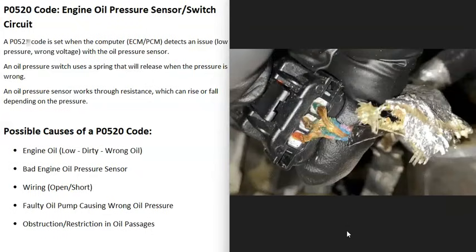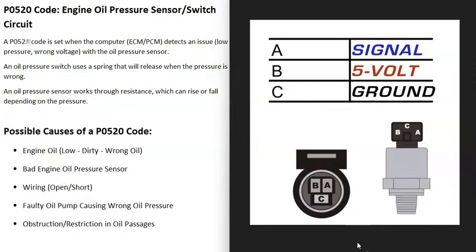The next thing that could cause this is a wiring problem — an open, a short, or something going on inside the wiring. If you have a multimeter, you can test the wiring. You'll need a diagram and schematics for your particular vehicle. It's very common for these oil pressure sensors to be three-wire sensors: you'll have voltage going to it, a ground, and a signal wire going back to the computer. You can check for good voltage, a good ground, and verify the signal wire has no open or short.